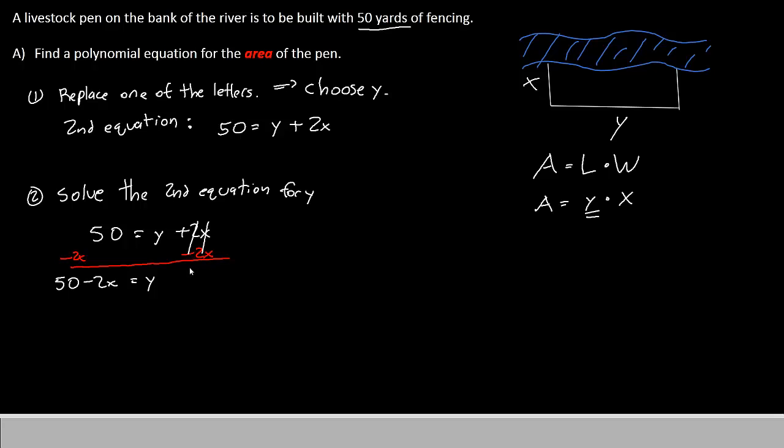For our third step, we will replace y with the expression we just found. That is the 50 minus 2x. We'll take the 50 minus 2x and replace the y with it, so that our area is now 50 minus 2x in parentheses times x.